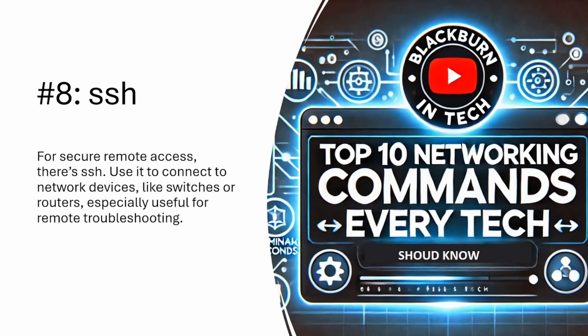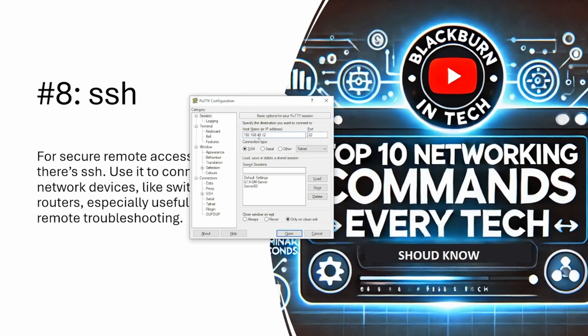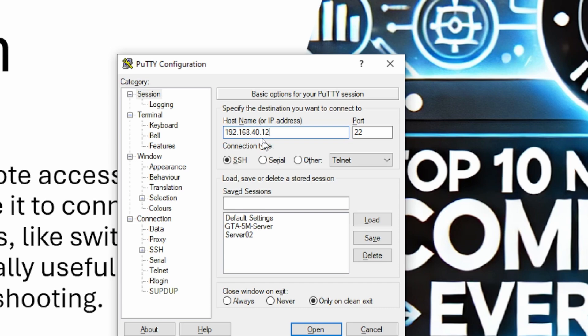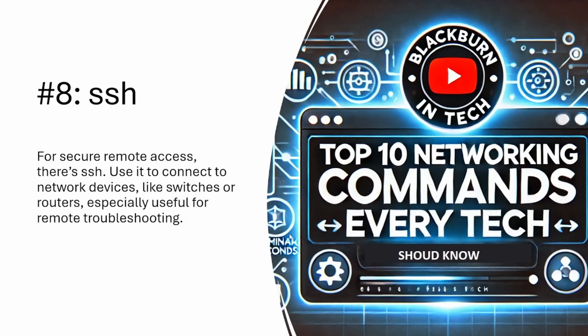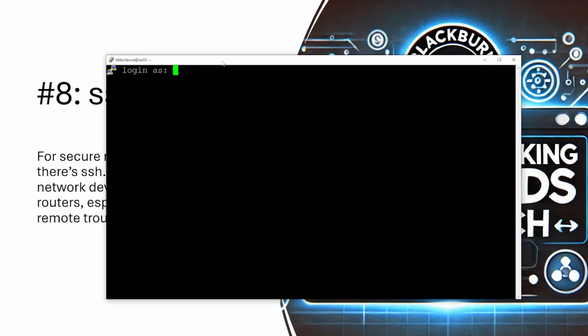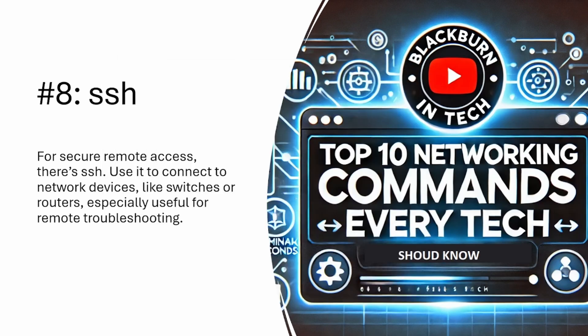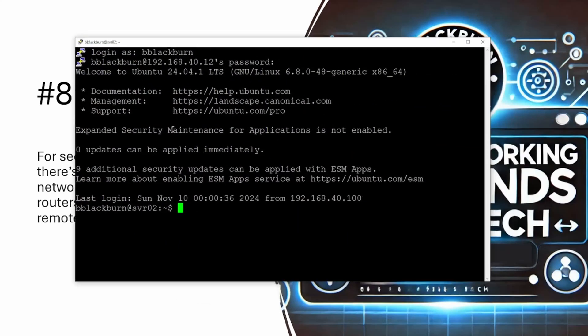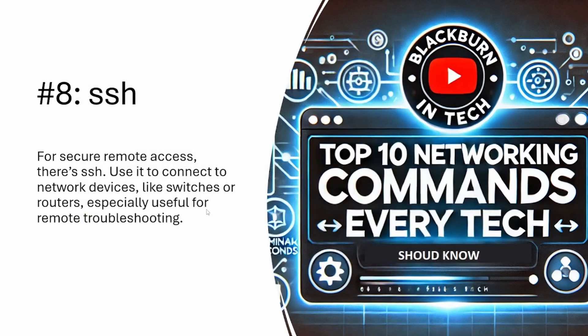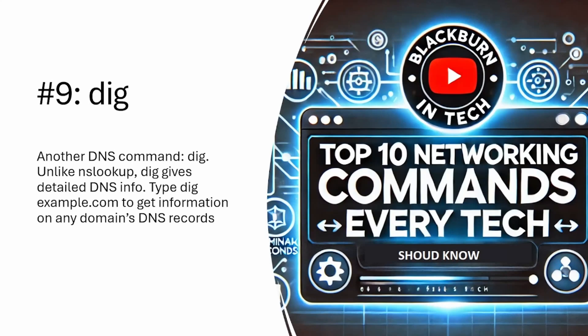SSH is a really common protocol used for secure remote access. It's a way to access a shell or remote session of another device, such as a router, switch, or even another computer through a command line interface. This comes in handy especially when troubleshooting and accessing other network devices. For example, pulling up PuTTY and SSH-ing to 192.168.40.12 — a server on this network — clicking Open takes us to a login page. Once logged in, even though I'm on my computer, this terminal session is actually connected to a remote server elsewhere on the network.